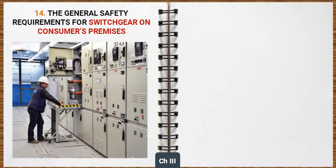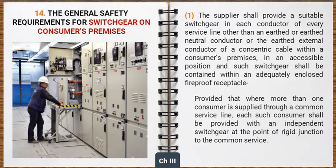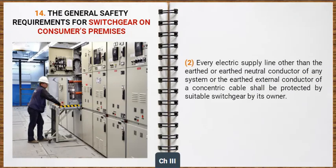Now let's learn about the general safety requirements for switchgear on consumer premises. The supplier shall provide a suitable switchgear in each conductor of every service line, other than an earthed or earthed neutral conductor or the earthed external conductor of a concentric cable, within a consumer's premises in an accessible position. Such switchgear shall be contained within an adequately enclosed fireproof receptacle. Where more than one consumer is supplied through a common service line, each such consumer shall be provided with an independent switchgear at the point of rigid junction to the common service. Every electric supply line, other than the earthed or earthed neutral conductor, shall be protected by suitable switchgear by its owner.